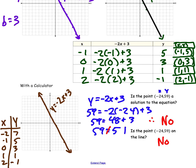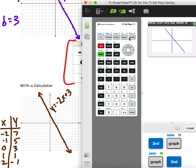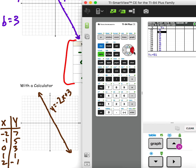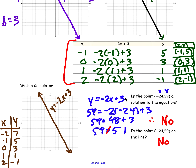I want to show a couple of other ways to check this. You could plug it into a table, similar to what we did earlier. You could graph it and continue to x equals negative 24 and see what the y value is. Or in the calculator, check the table and scroll up to x equals negative 24 — the y value is 51, not 59. So that is not a solution to the equation and not a point on the line.